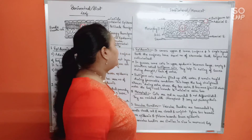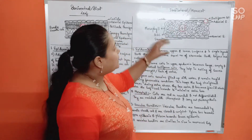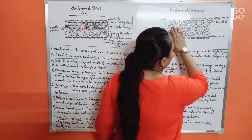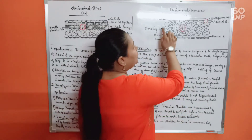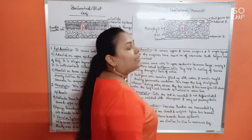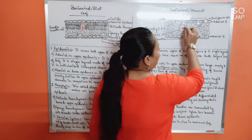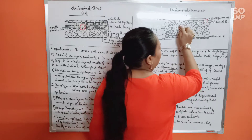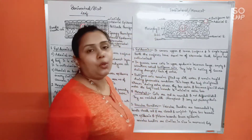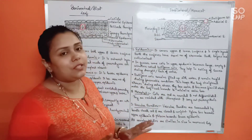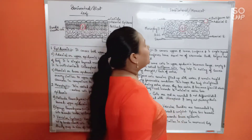Inside the epidermis, there is no distinct palisade or spongy parenchyma. All the cells are similar, loosely packed, and rounded or oval in shape. Vascular bundles remain surrounded by bundle sheath cells, with xylem towards the upper epidermis and phloem towards the lower epidermis.